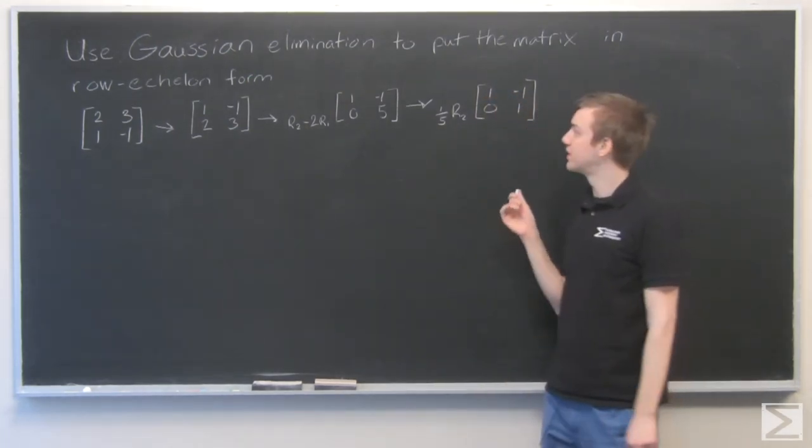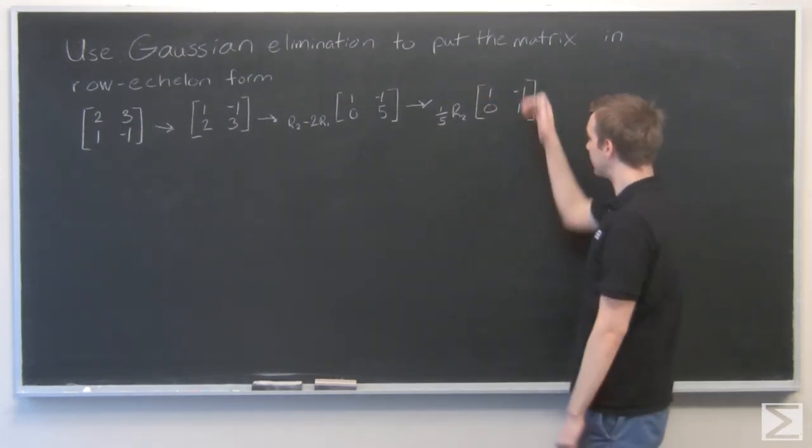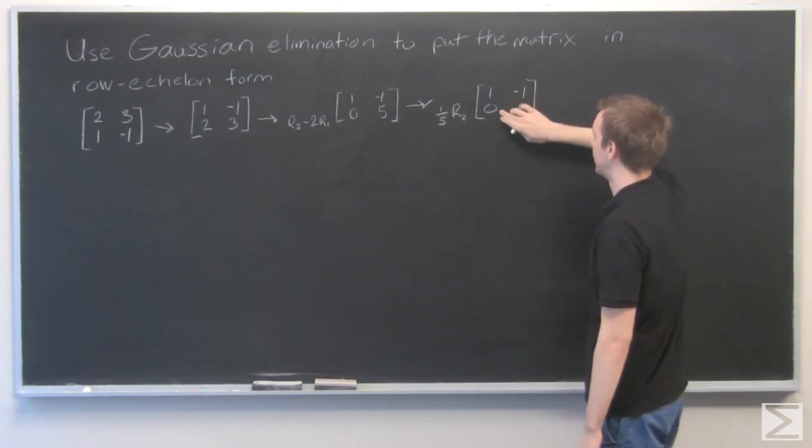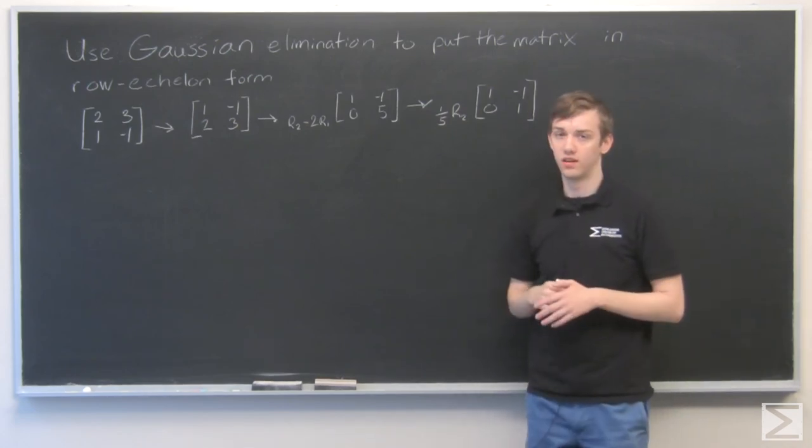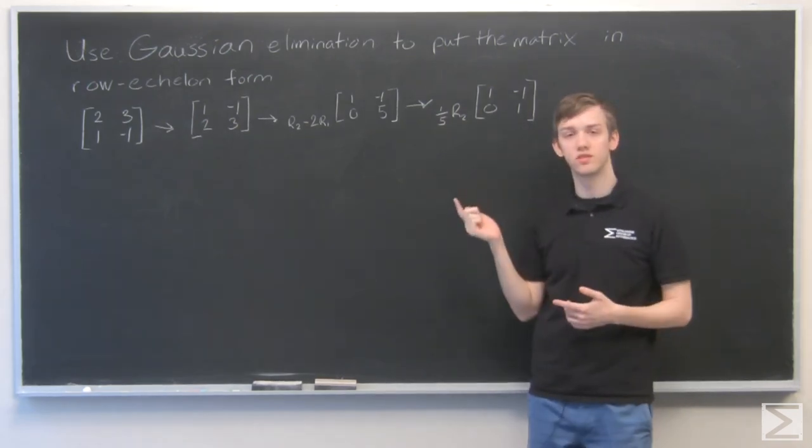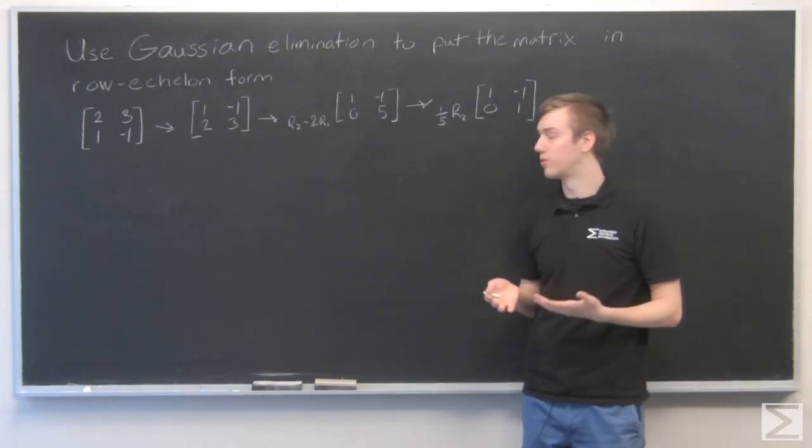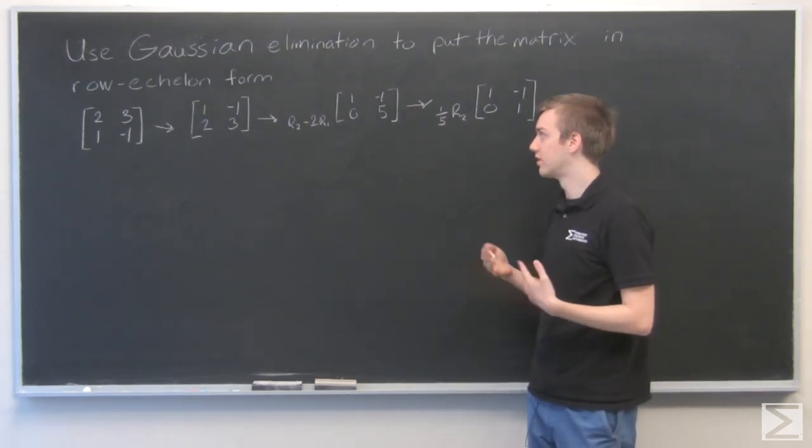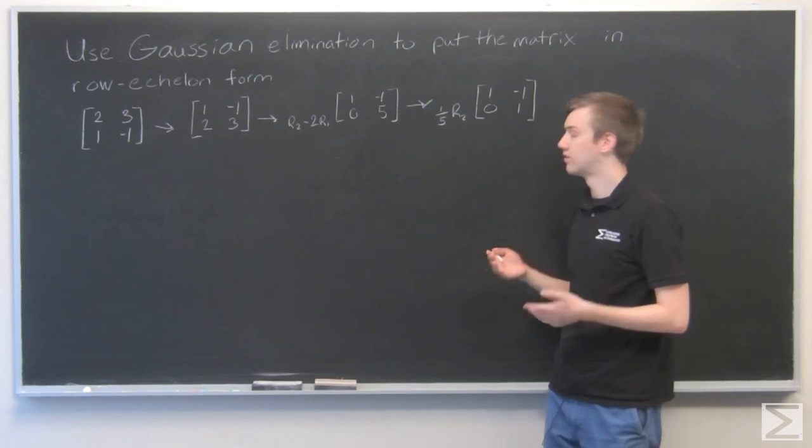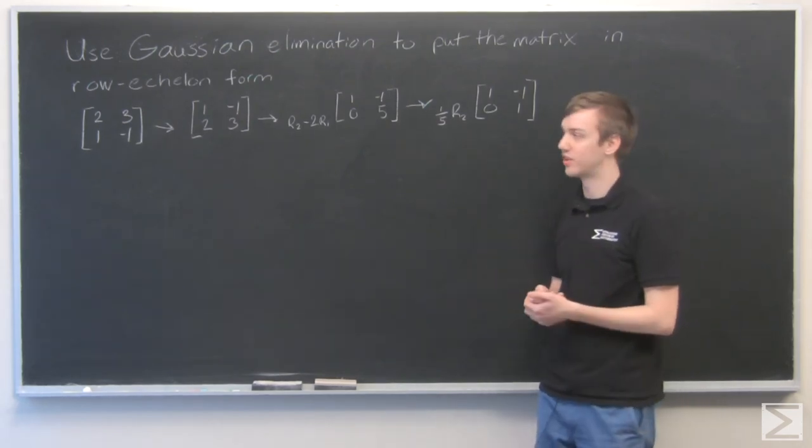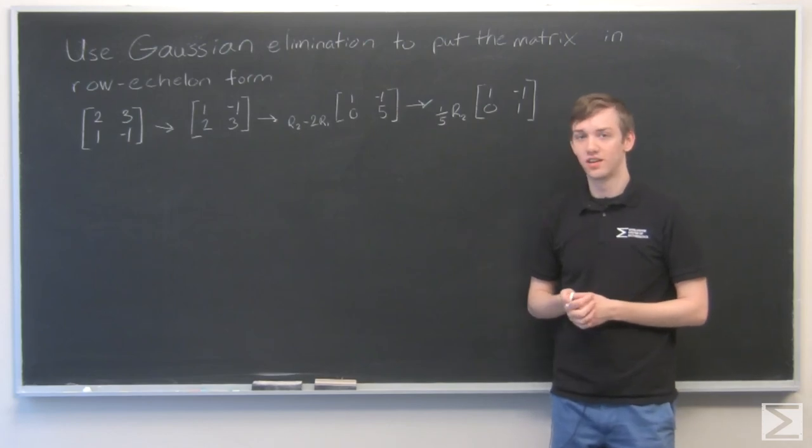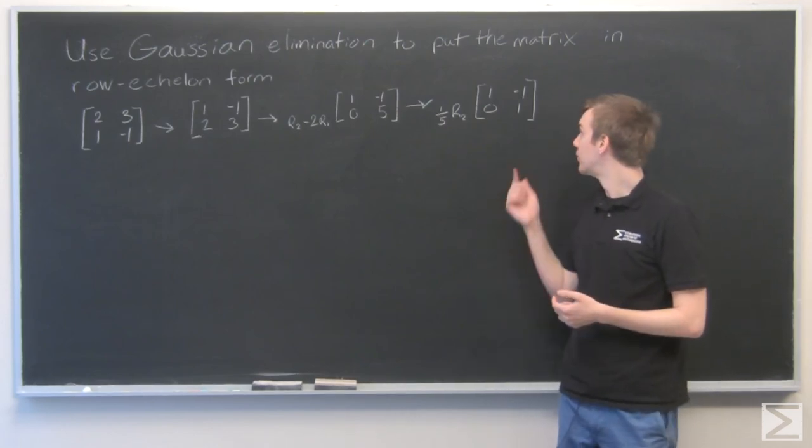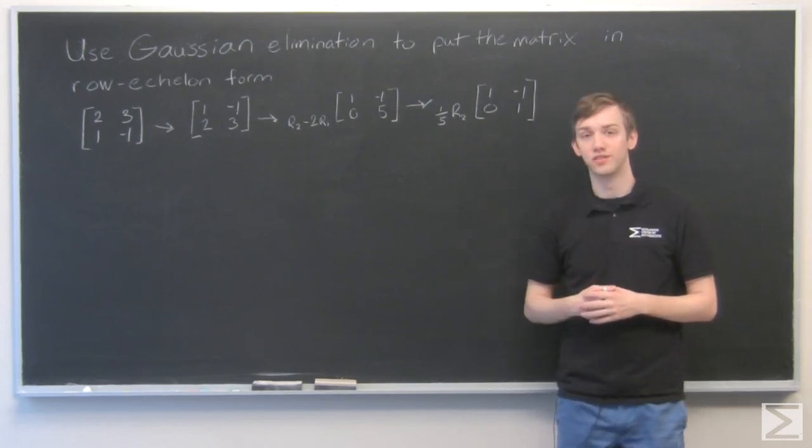So now this matrix is in row echelon form. There's a one in the upper left-hand corner and a zero below it, and a one in the lower right-hand corner. It doesn't matter about that minus one right there. This solution is not unique. There are other forms of this matrix that you could get. There are other methods that you could take to get to row echelon form. And this is just what I think is the quickest solution and easiest solution. So one minus one, zero one is one possible solution.